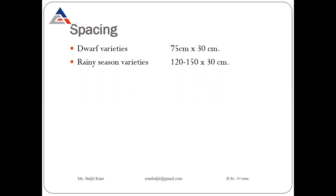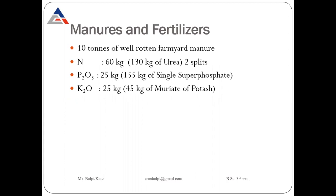Row-to-row distance should be maintained at 75 cm for dwarf varieties. For rainy season varieties, which are indeterminate type, the distance between rows should be 120 to 150 cm and plant-to-plant distance should be 30 cm.